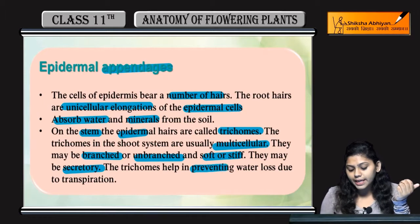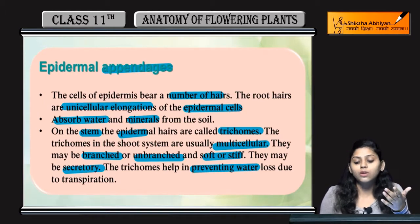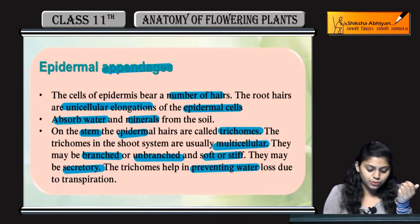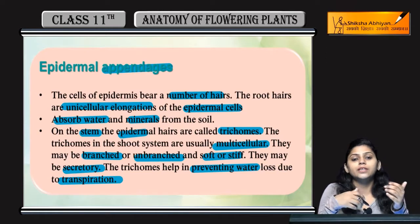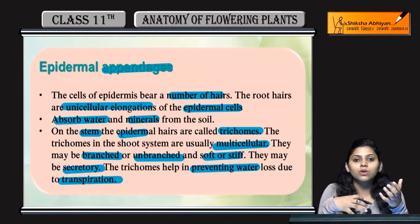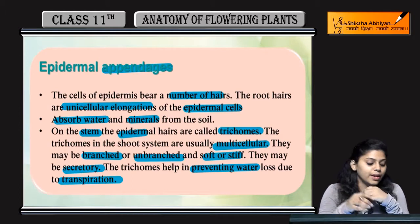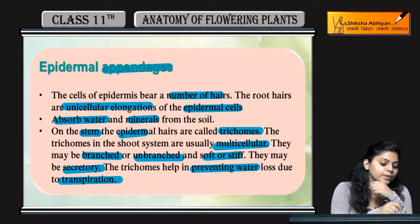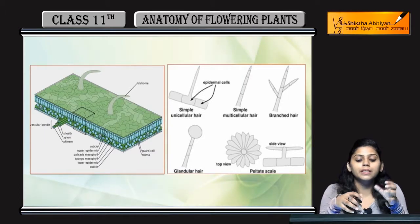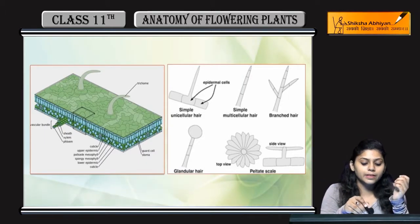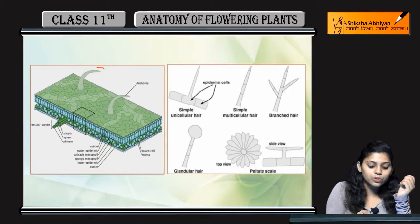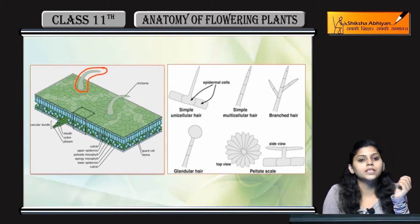Trichomes help to prevent water loss due to transpiration. Trichomes, as extensions of the epidermal layer, help prevent water loss. You can see this extended structure from the epidermis — this is a trichome.